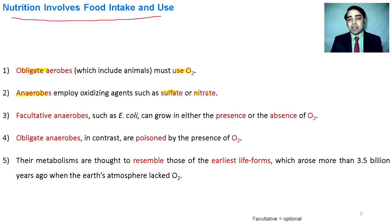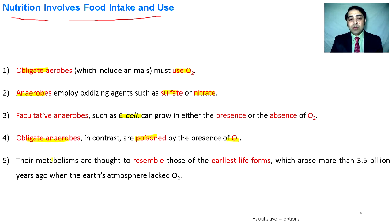Obligate aerobes utilize oxygen to survive, while anaerobes utilize sulfate and nitrate to oxidize biological molecules and produce energy. Facultative aerobes like E. coli can grow either in the presence or in the absence of oxygen. Obligate anaerobes are poisoned by the presence of oxygen; they always live in places where there is low or no oxygen.